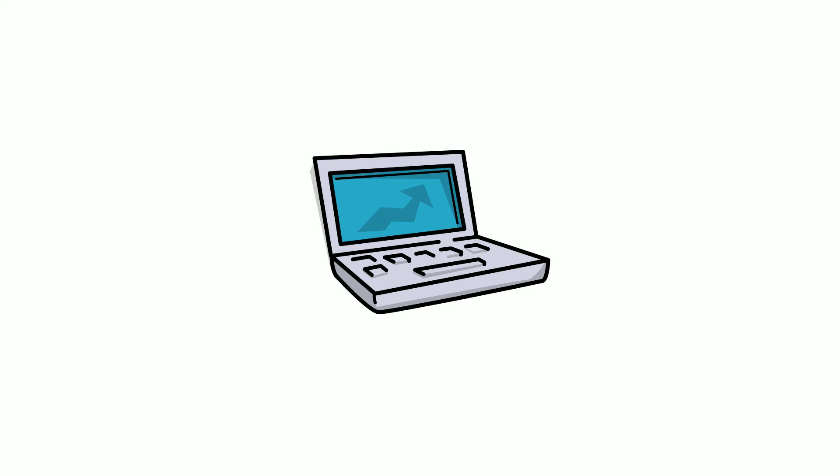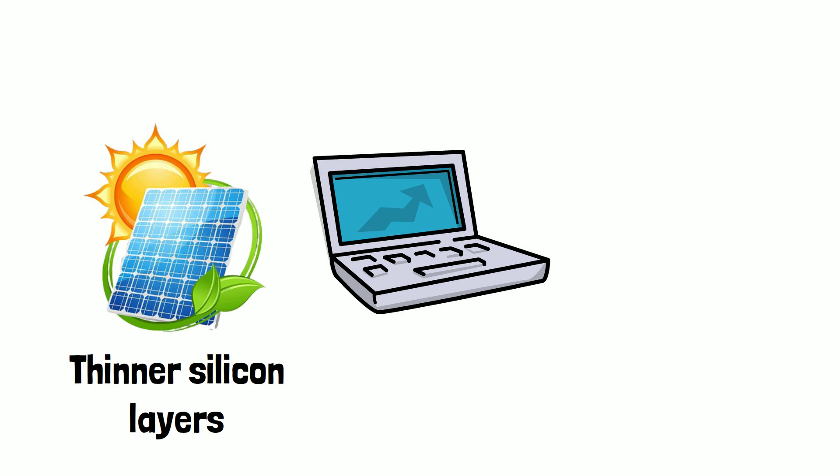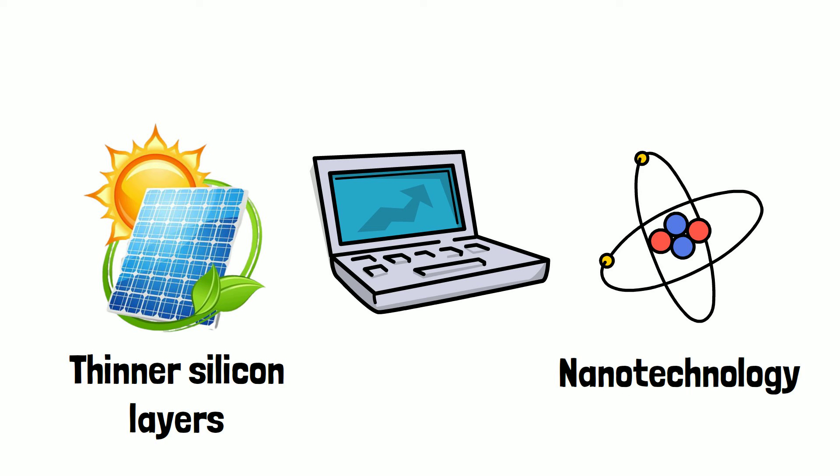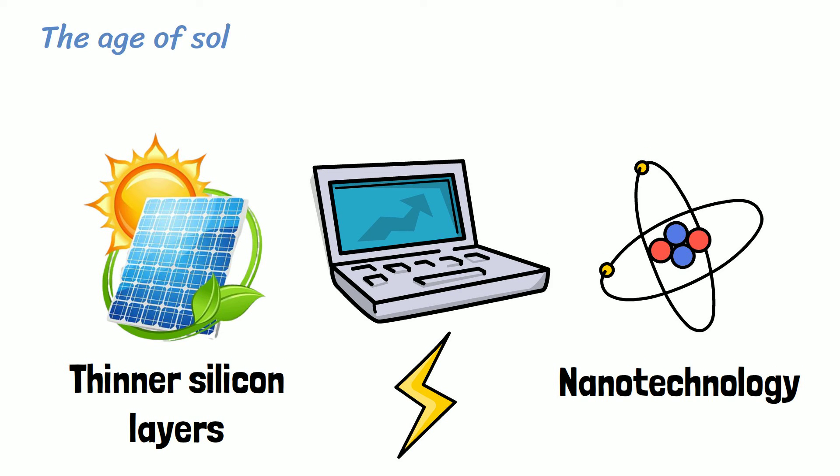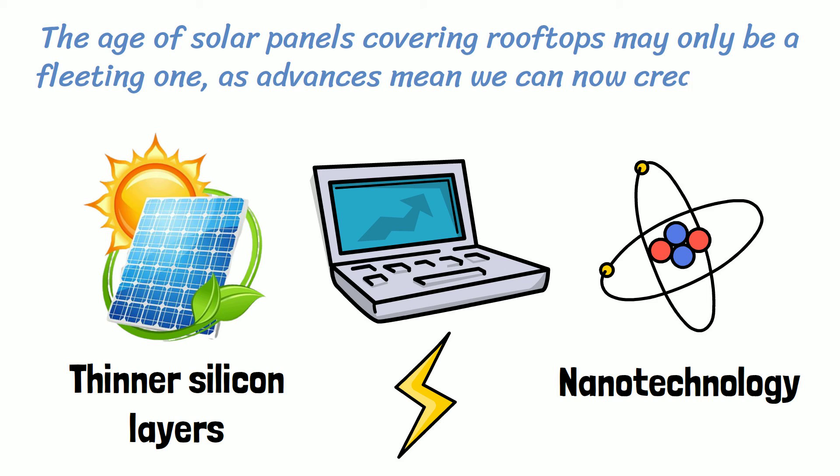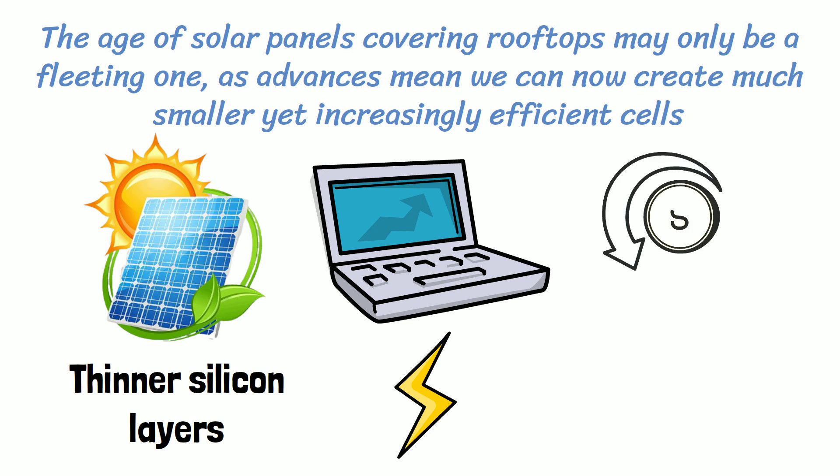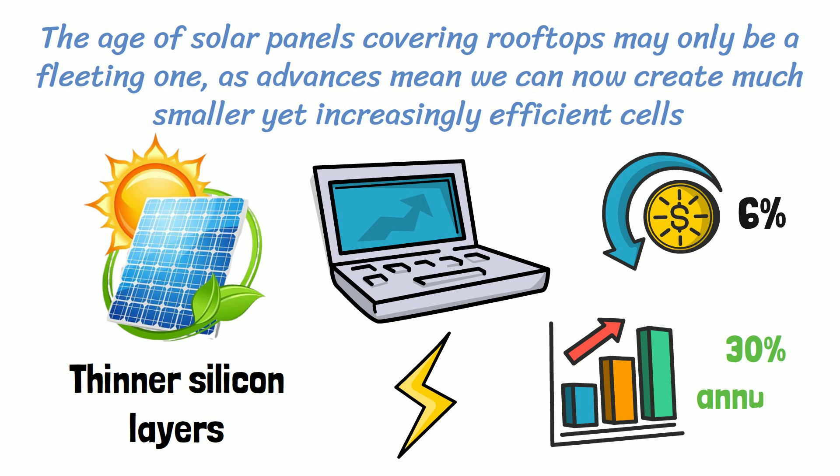Significant progress has been made in improving the efficiency of solar energy through the use of thinner silicon layers, nanotechnology to focus the sun's energy, and better energy capture devices. The age of solar panels covering rooftops may only be a fleeting one, as advances mean we can now create much smaller yet increasingly efficient cells. Solar prices are estimated to be dropping by 6% and capacity is growing by 30% annually.